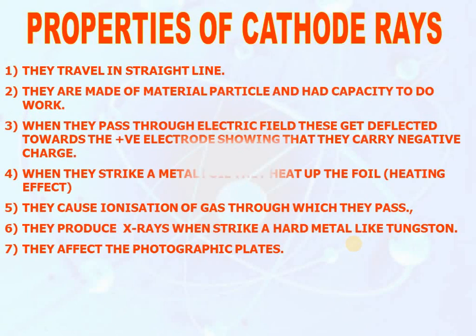Properties of cathode rays: First, they travel in a straight line. Second, they are made of material particles and have the capacity to do work. Third, when they pass through an electric field, they get deflected towards the positive electrode, showing that they carry negative charge. Fourth, when they strike a metal foil, they heat up the foil — they show a heating effect. Fifth, they cause ionization of a gas through which they pass. Sixth, they produce X-rays when they strike a hard metal like tungsten. Seventh, they affect photographic plates.